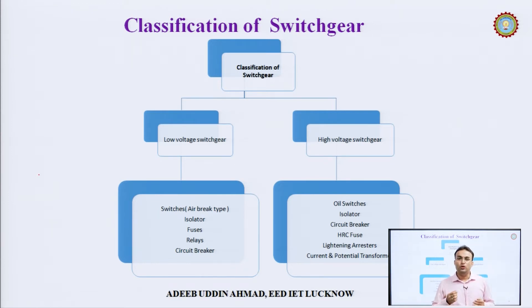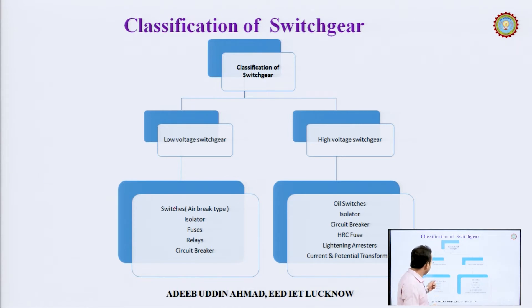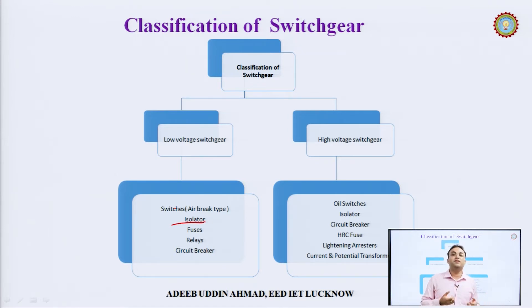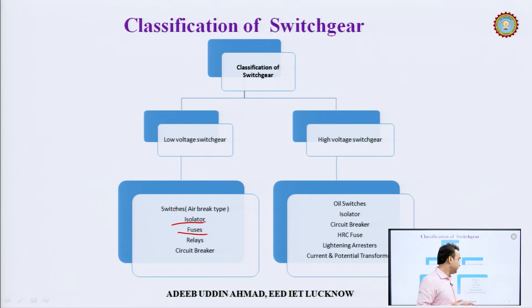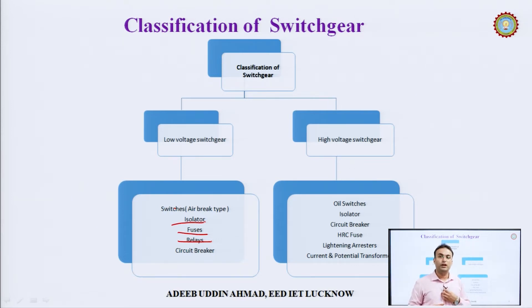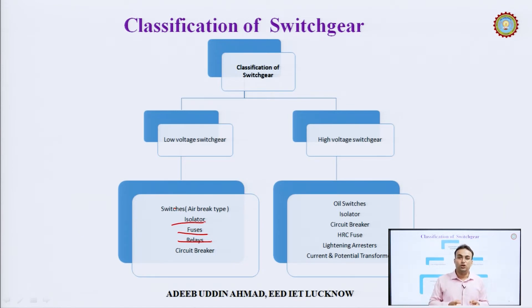For low voltage classification, switch gear includes air brake switches and isolators. An isolator is a mechanical switch used to disconnect the system, but it has very different qualities compared to a circuit breaker. We also have different types of fuses, which are a protective method to avoid damage to components. Relays are a very important sensing element used to sense a fault — if there is a fault, the relay senses it and gives a signal to the circuit breaker.